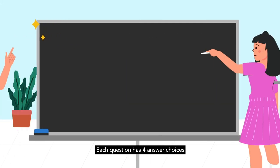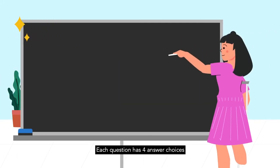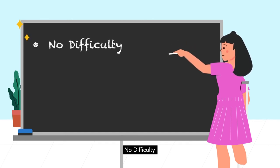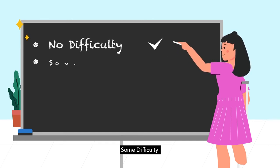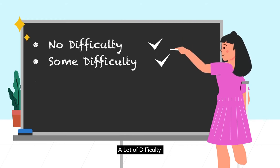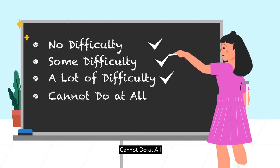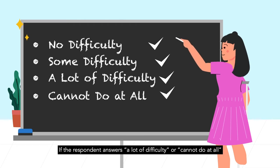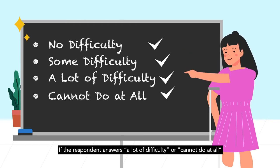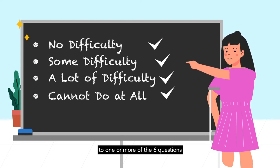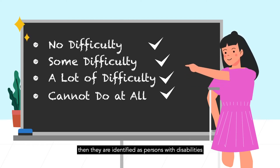Each question has four answer choices: no difficulty, some difficulty, a lot of difficulty, or cannot do at all. If the respondent answers 'a lot of difficulty' or 'cannot do at all' to one or more of the six questions, then they are identified as persons with disabilities.